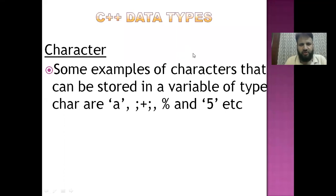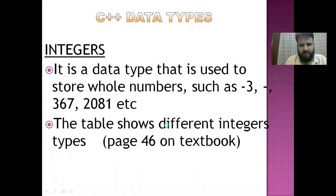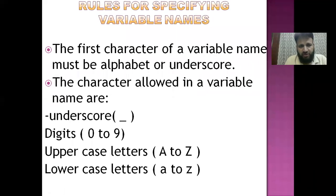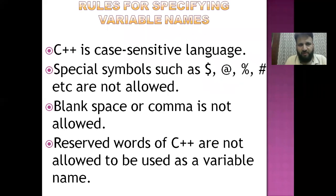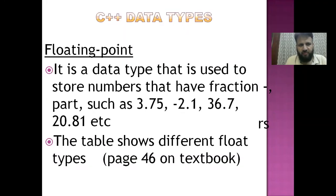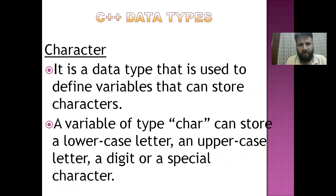In the previous session we studied about the variables and constants of C++ programming. We also saw the rules for specifying variable names. Similarly, we studied C++ data types: integers, floating points, and characters.